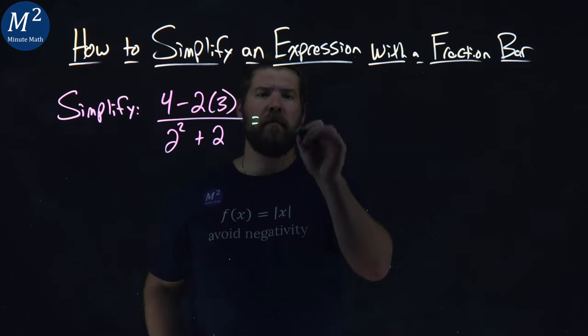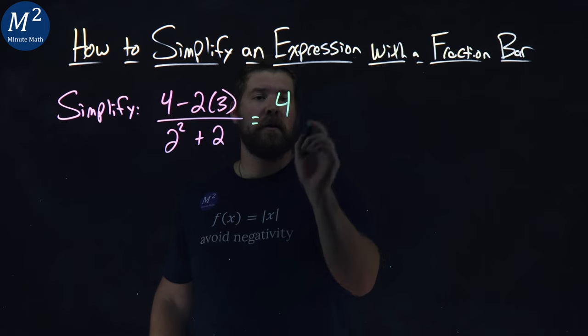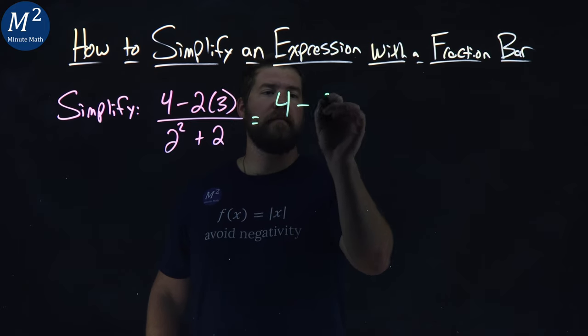4 minus 2 times 3. Order of operations says multiplication comes first. So 4 minus 2 times 3 is 6.